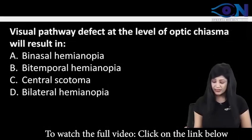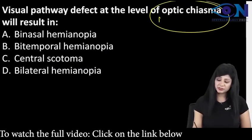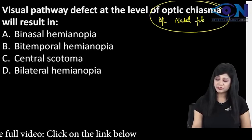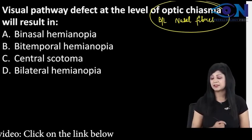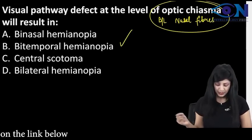Next: visual pathway defect at the level of optic chiasm. Optic chiasm means the defect is in the bilateral nasal fibers. Because there is a defect of the bilateral nasal fibers, we will have bitemporal hemianopia. So the answer is bitemporal hemianopia.